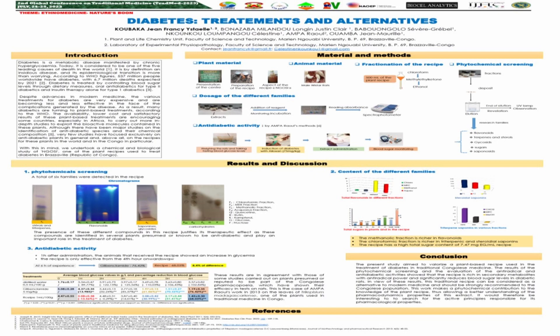Concerning my methodology: my plant material consists of a recipe of plants prepared at a center called Senac. My animal material consists of Wistar rats with masses between 180 and 270 grams.